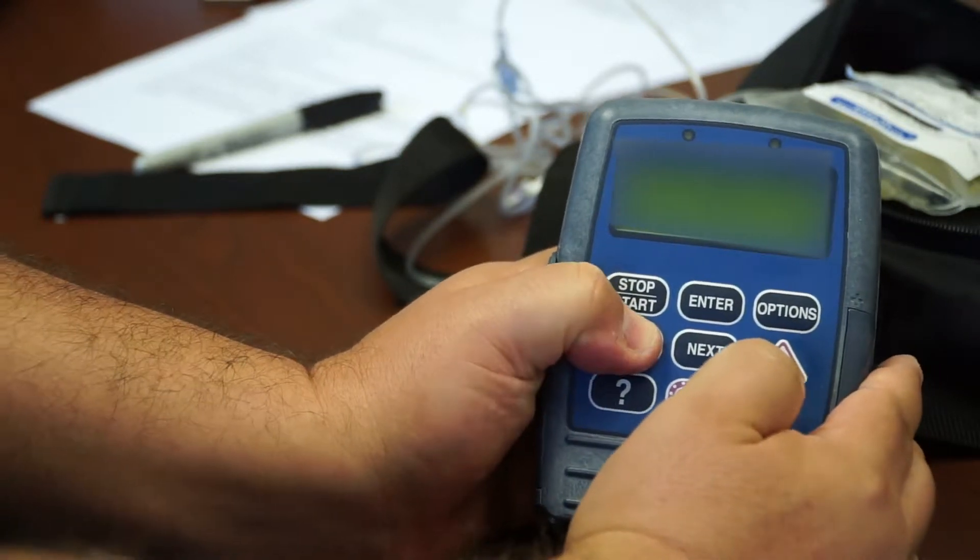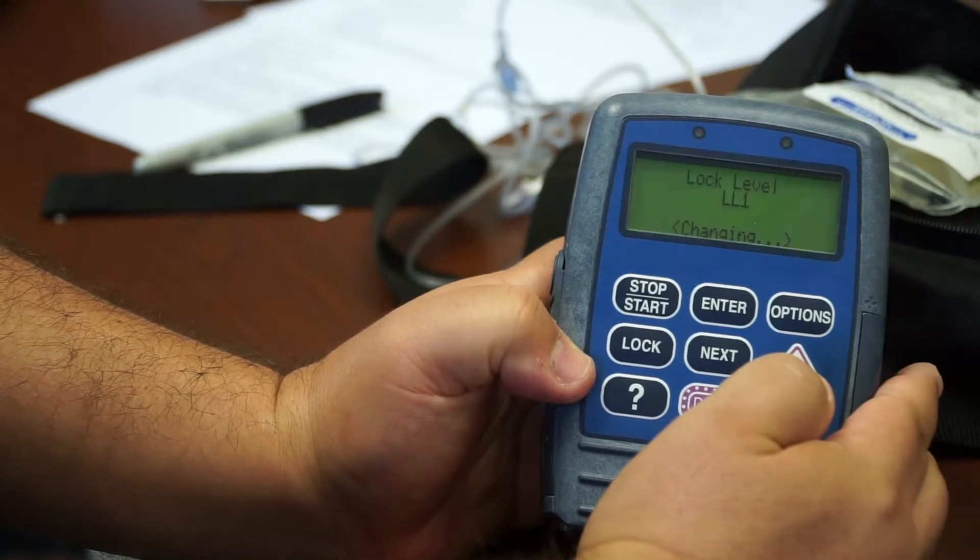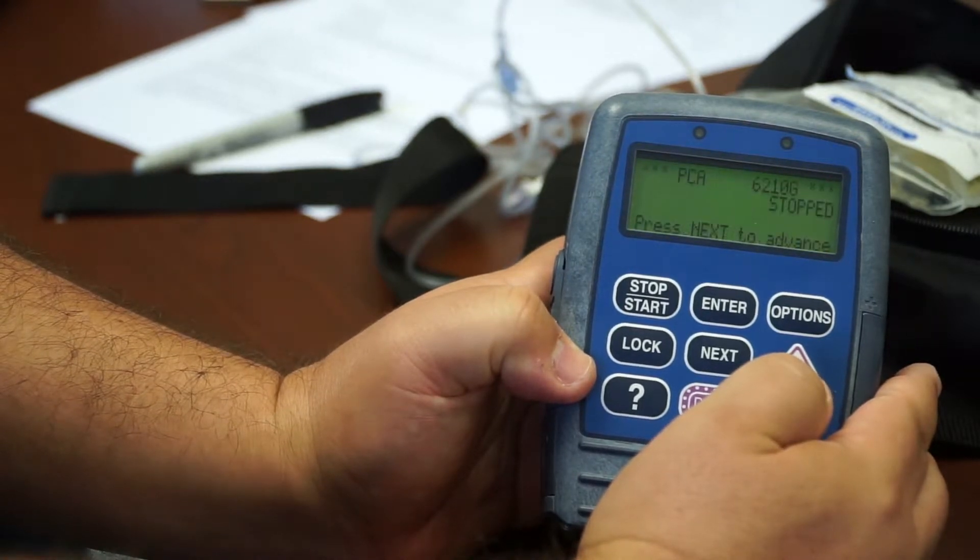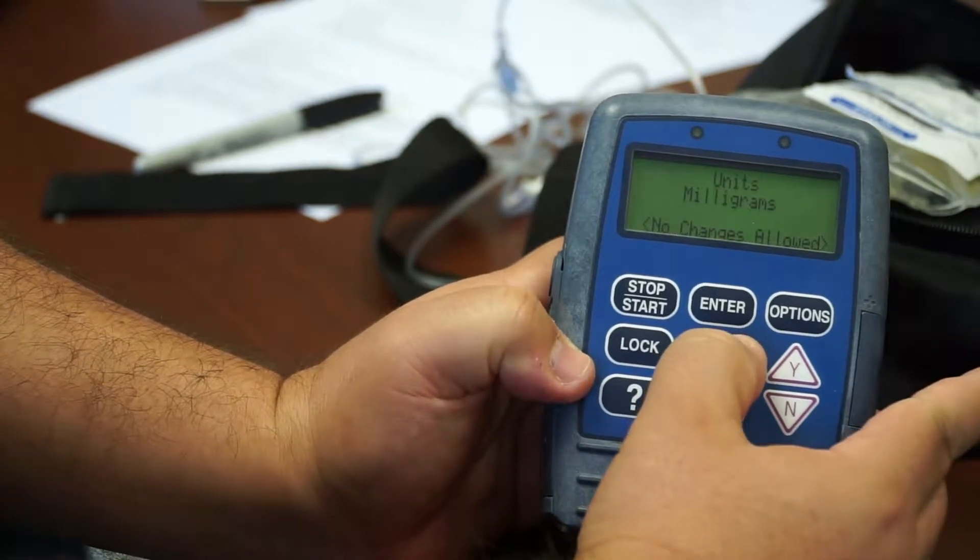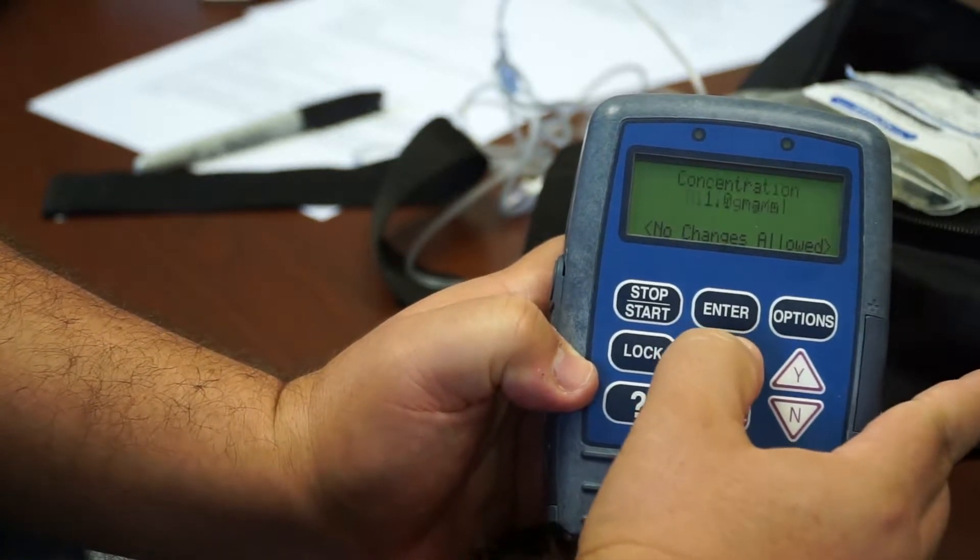You put in the correct code, you click on lock, and it says lock level changing. And now, it's on one. And you can see that the data settings are no longer programmable.